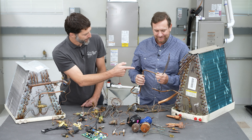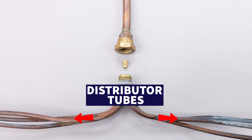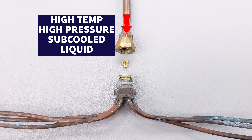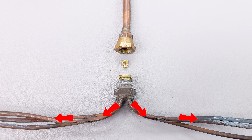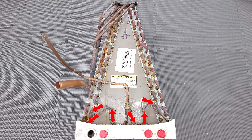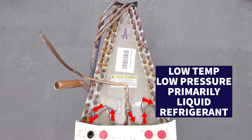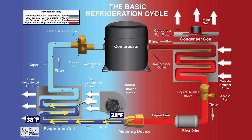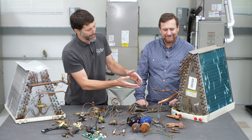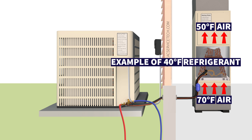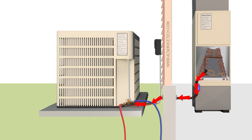On these fixed orifices — like what Ty's holding right here — these are distributor tubes. On a fixed orifice like this one, you have high-pressure, high-temperature subcooled liquid entering this restriction, which lowers the pressure, and then it goes through these distributor tubes to distribute refrigerant to multiple points inside the evaporator coil. The refrigerant is now a low-pressure, low-temperature, primarily liquid refrigerant — with a little flash gas because you're lowering the pressure — and it undergoes a phase change for most of the interior volume of the coil, absorbing heat and carrying it out to the outdoor condenser where it will be rejected.